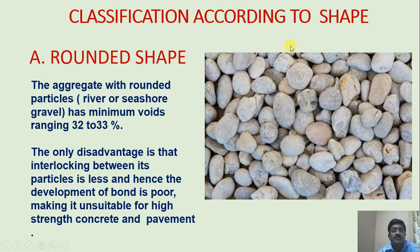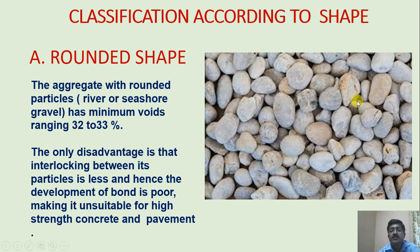Classification according to shape. First one is rounded shape. Aggregates with rounded particles found in river or seashore gravel have minimum voids ranging from 32 to 33%. The disadvantage is that interlocking between particles is less and bond development is poor, making it unsuitable for high strength concrete and pavement.